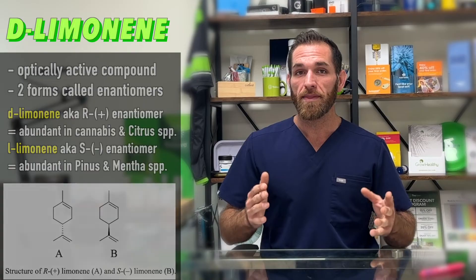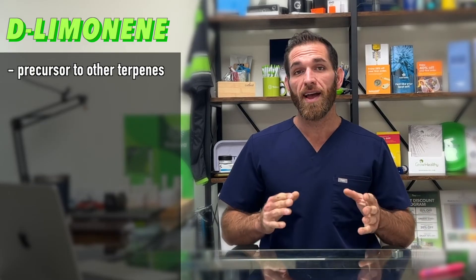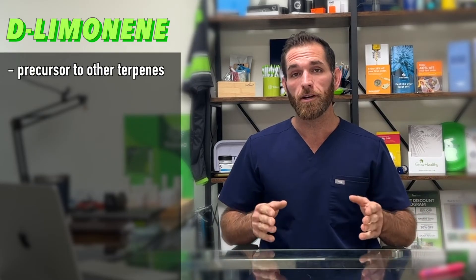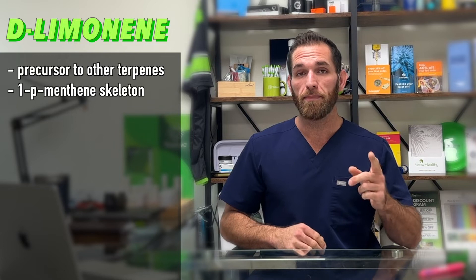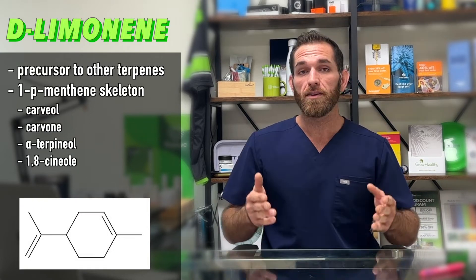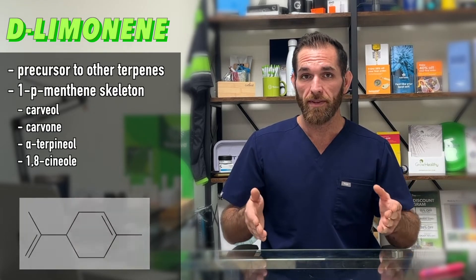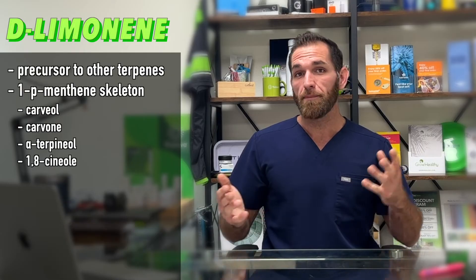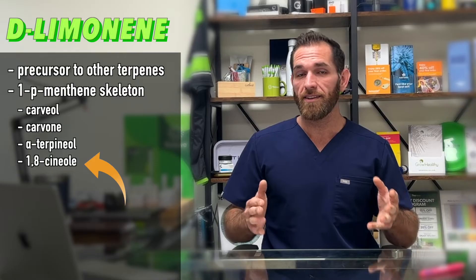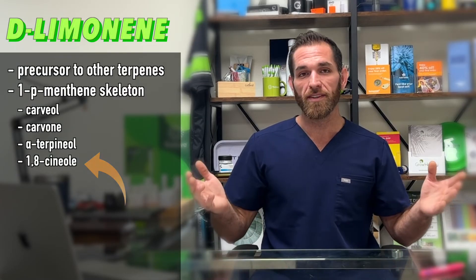Limonene is pretty special compared to other terpenes because it itself is a precursor to other monoterpenes. In fact, most of the terpenes that bear the 1p-menthane skeleton that limonene has are also derived from limonene. For example, 1,8-cineol is eucalyptus, and I love eucalyptus.